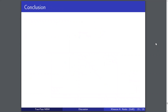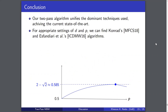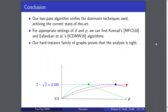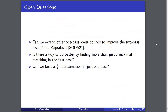To conclude: our two-pass algorithm combines the two dominant techniques in the area to get a meta-algorithm that achieves the current state of the art. For appropriate settings of d and p, we can recover Conrad's 2018 algorithm, the current state of the art, and Esfandiari's 2016 algorithm. We also prove that our analysis is tight, and with our lower bound result, we reduce the gap of possibility for this specific class of algorithms. Open questions include: can we extend other one-pass lower bounds to the two-pass setting? Is there a way to find an improved algorithm that does more than just computing a maximal matching in the first pass? And the age-old question: can we beat a half approximation using just one pass of the stream? Thank you.